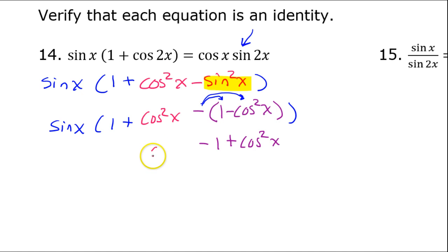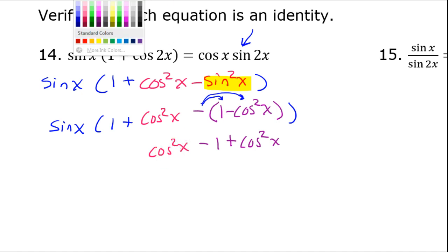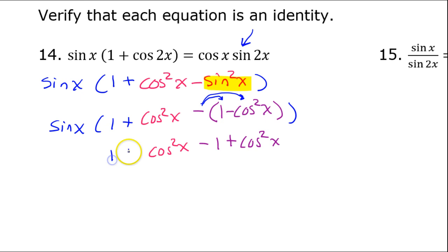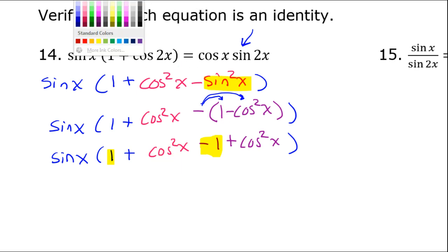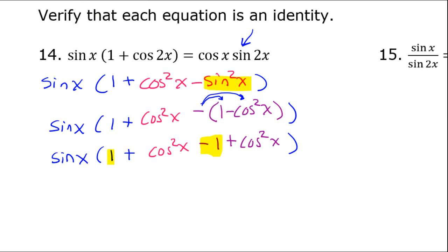I still have cosine squared x, 1 plus all of this, and sine x out front. Looking for like terms: I've got a positive 1 and a negative 1 — they completely cancel each other out. Then I have cosine squared plus cosine squared, which gives me 2 cosine squared. So now inside the expression I have 2 cosine squared x, with sine x out front.